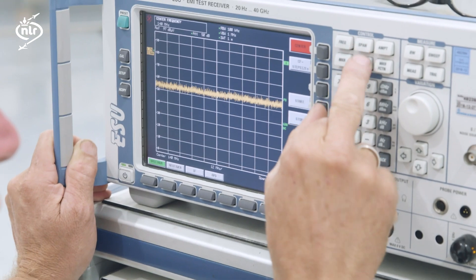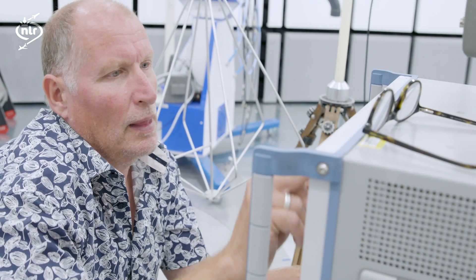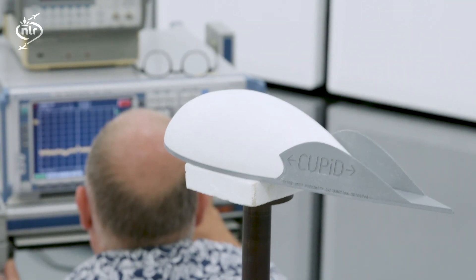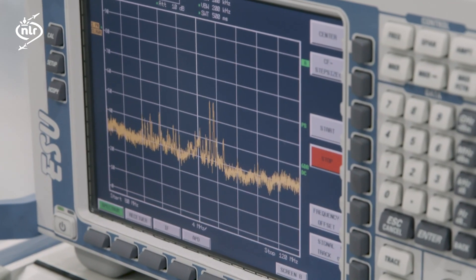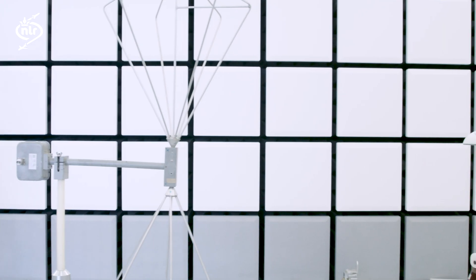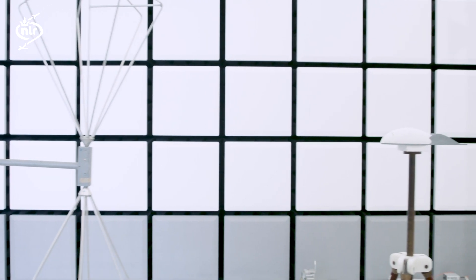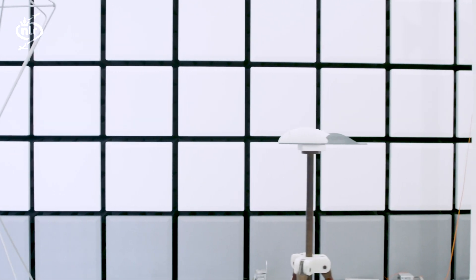An EMC test can show to what extent a product is sensitive to various kinds of radiation. This can be electromagnetic radiation that can disrupt the functioning of the electronics, distort the communication or the reception of the GPS signal.